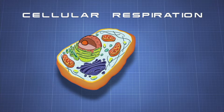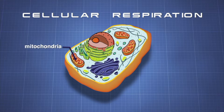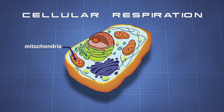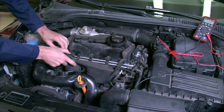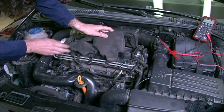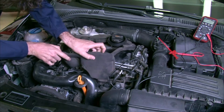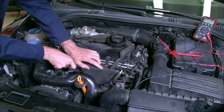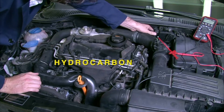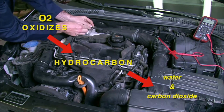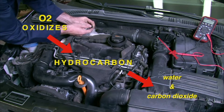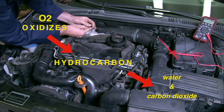Where does cellular respiration take place? It takes place in the mitochondria of eukaryotic organisms. The process of cellular respiration can be compared to the operation of a gasoline engine. In the engine, gasoline is a hydrocarbon. Using air, specifically O2, the gasoline is oxidized and turns into water and carbon dioxide.